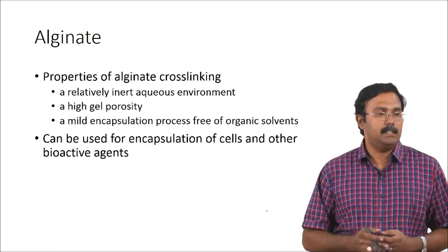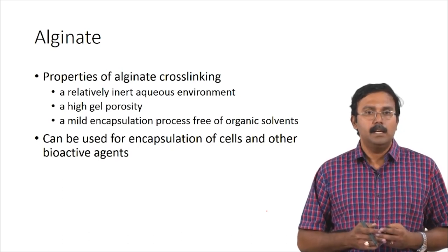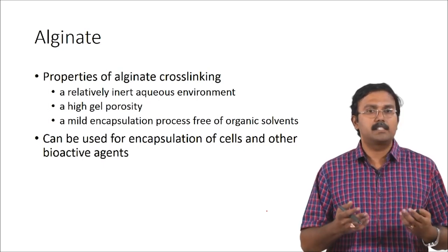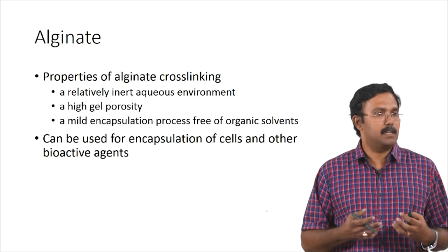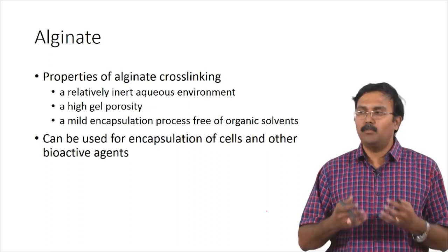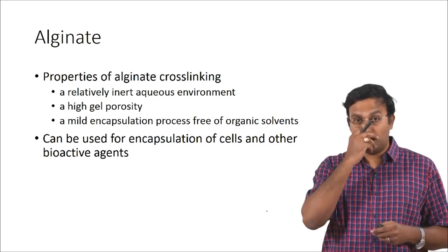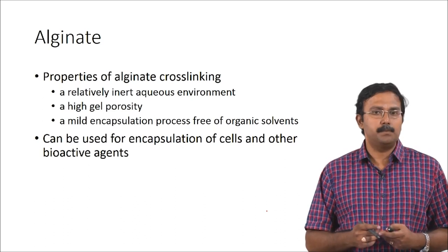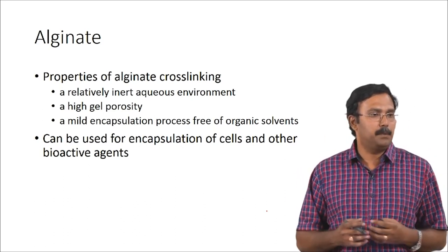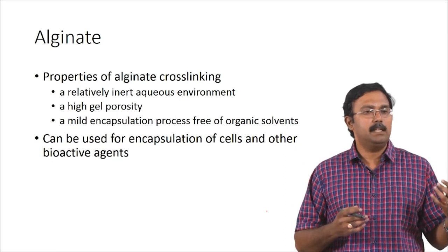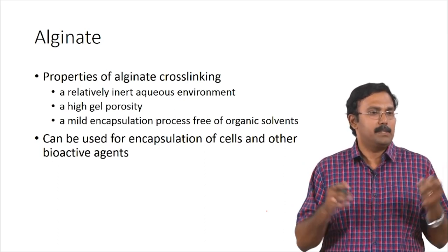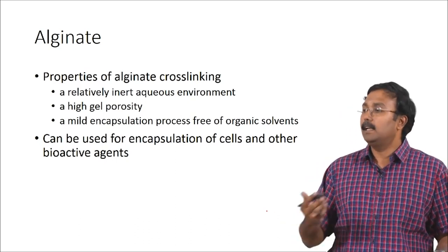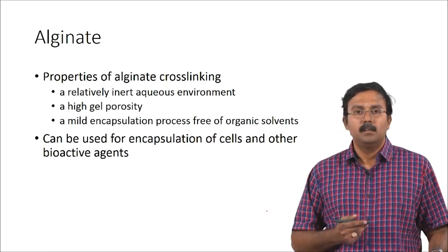The advantage of alginate cross-linking is it occurs in a relatively inert aqueous environment — you do not really need harsh conditions to create these kinds of cross-links, which means it would be conducive for biological materials like cells and enzymes. It also has very high gel porosity, meaning there can be very good mass transport — material can come in and leave. Cells which are entrapped would actually get enough nutrients to survive when encapsulated by calcium alginate beads.